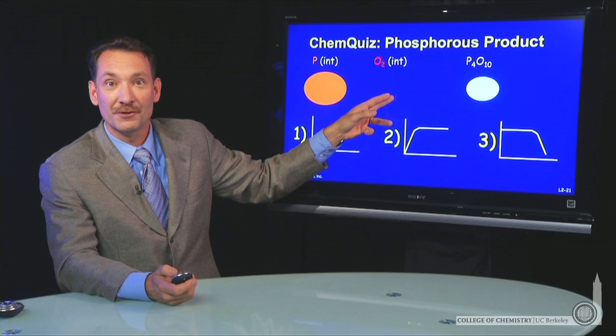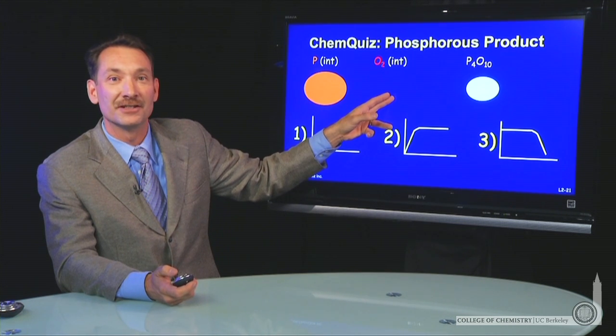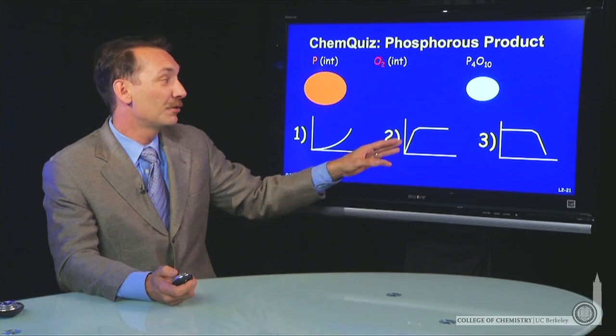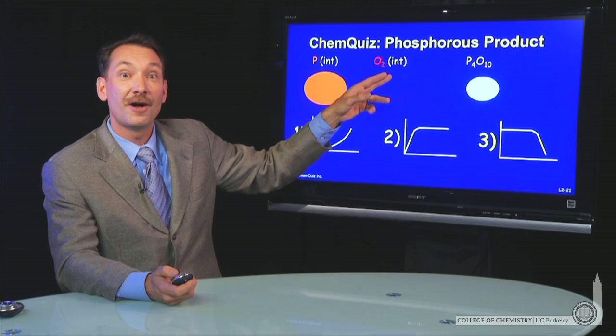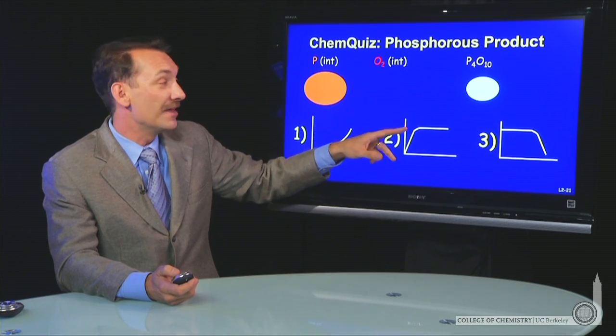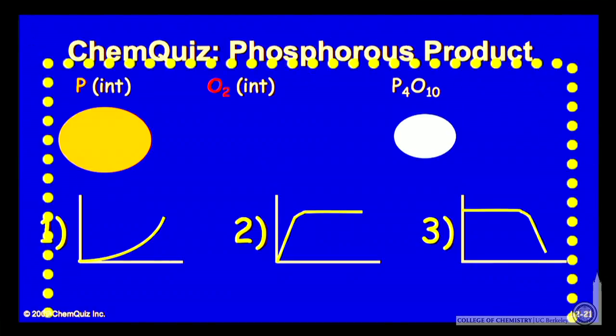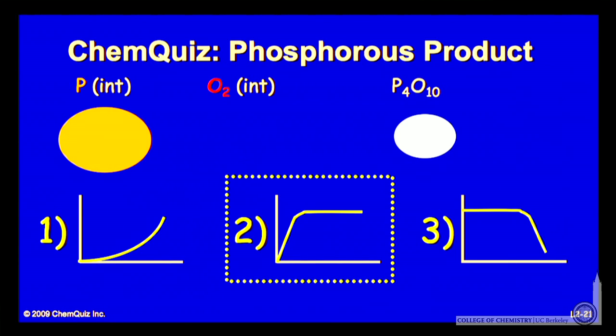Oxygen limits the reaction. It's called a limiting reagent. So product will build up until all the oxygen is consumed and then no more phosphorus oxide can be made. So the correct answer is B, increasing initially, leveling off.